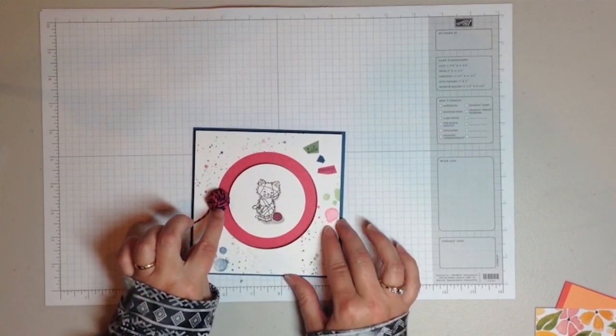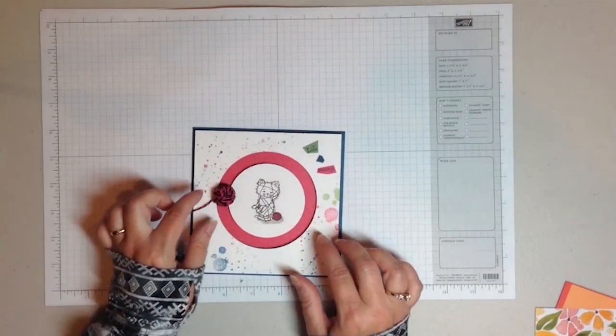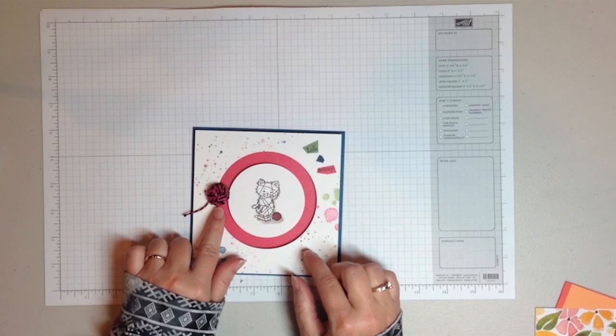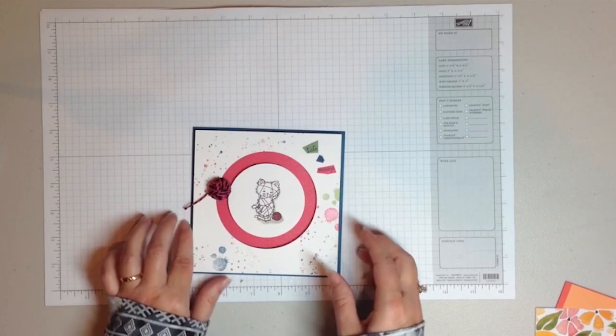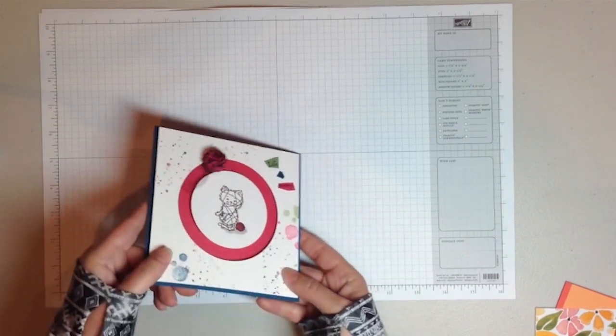Then whatever you want to be for your spinner, that goes on the top. In this case, I took a three quarter inch piece of cardstock, wrapped that with baker's twine to make a little ball of yarn.